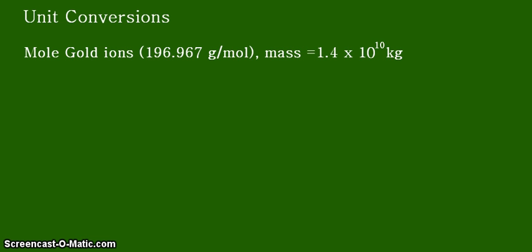And given that the molar mass, which was also given earlier in the other video, of gold is 196.967 grams per mole. And from the previous video, the mass of the gold in the ocean is 1.4 times 10 to the 10 kilograms.